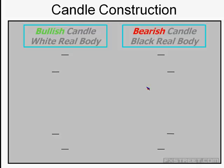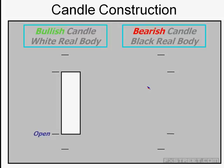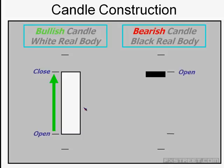A quick snapshot on candlesticks — a real-time snapshot. On the left of your screen you're going to see a real-time market move. The market opens, prices rise, and you can see the color of the candlestick — in this example it's white. The close is above the open, so the market has risen. Think of EURUSD maybe trading at 140, pushing up to 150 and closing at 150 — a positive price move. The color tends to be white, though you can choose any other color. Classically, white is for up moves.